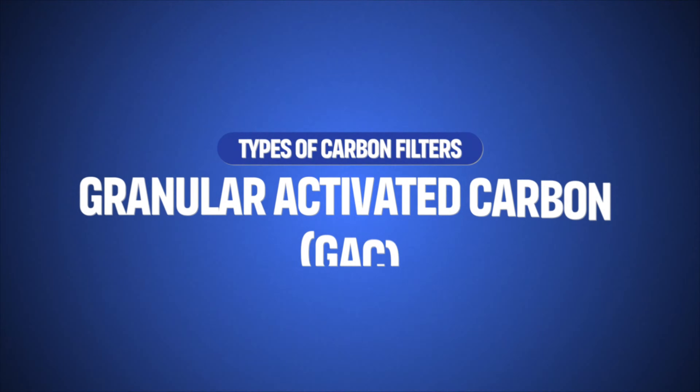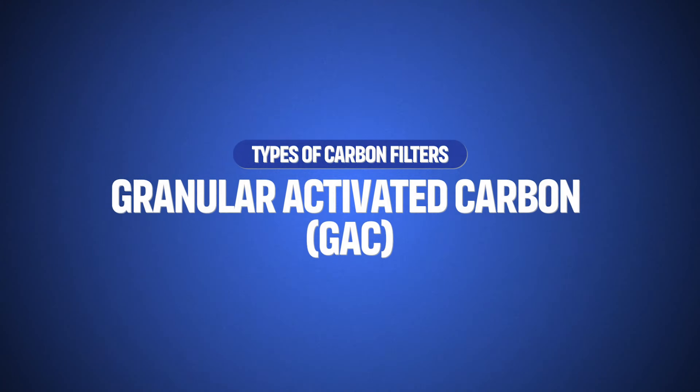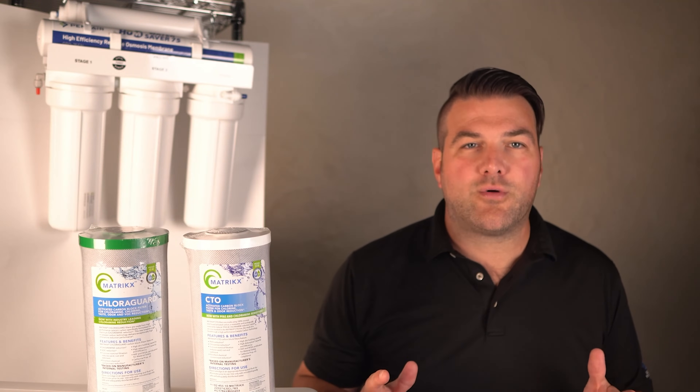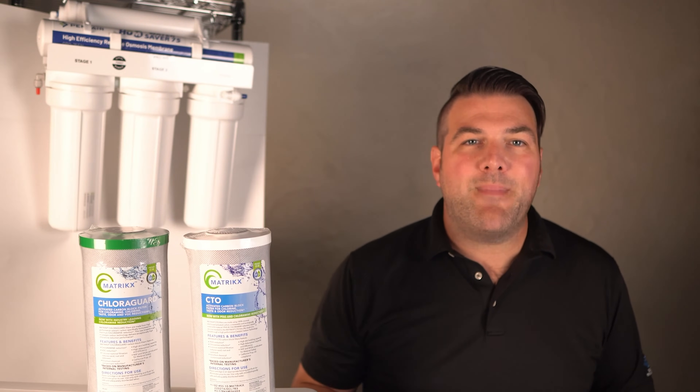Granular activated carbon filters use loose granules of carbon. They're effective for general chemical and chlorine removal, but may allow small contaminants to pass through due to the larger size of the granules, making them less effective than fine filtration.